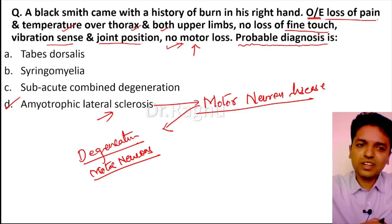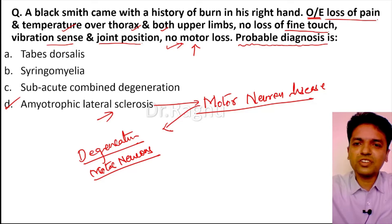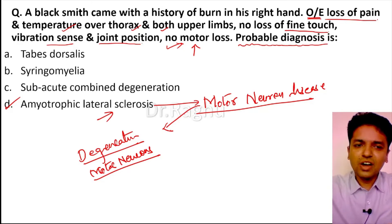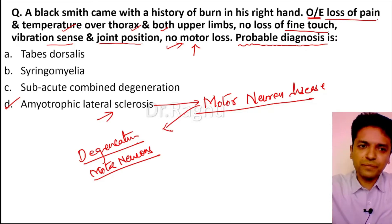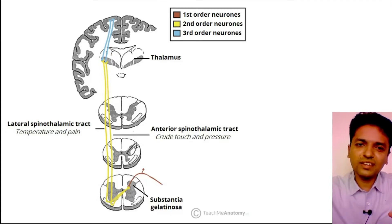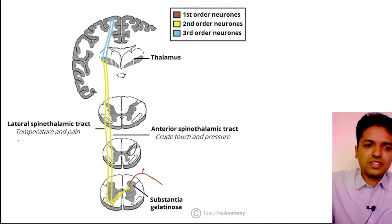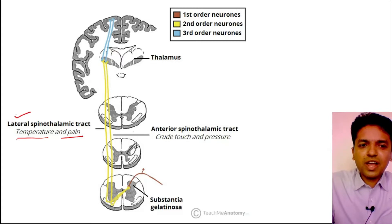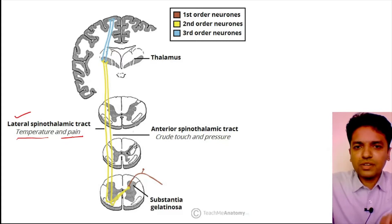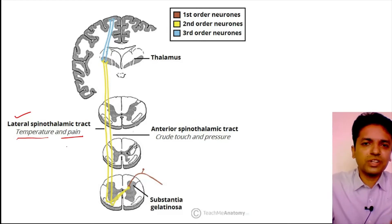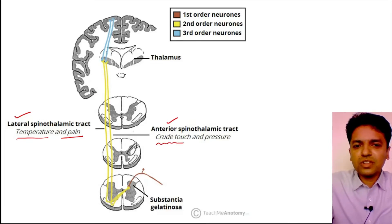Three options remain: tabes dorsalis, syringomyelia, and subacute combined degeneration of the spinal cord. To understand these diseases and their sites of lesion, let's first review the anatomy. The sensation of pain and temperature is carried by the lateral spinothalamic tract. There are two spinothalamic tracts — the lateral spinothalamic tract and the anterior spinothalamic tract, which carries crude touch and pressure.